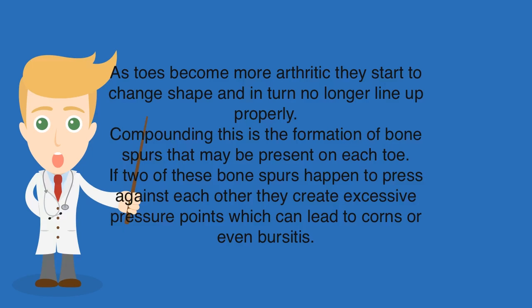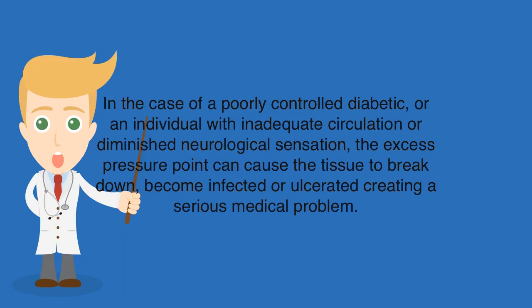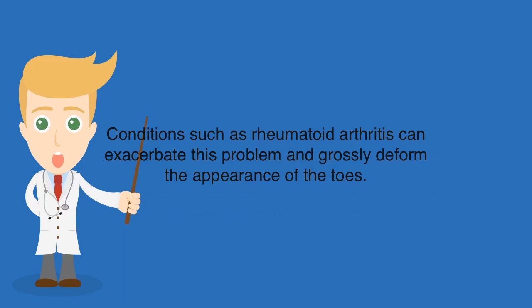As toes become more arthritic, they start to change shape and in turn no longer line up properly. Compounding this is the formation of bone spurs that may be present on each toe. If two of these bone spurs happen to press against each other, they create excessive pressure points which can lead to corns or even bursitis. In the case of a poorly controlled diabetic, or an individual with inadequate circulation or diminished neurological sensation, the excess pressure point can cause the tissue to break down, become infected or ulcerated, creating a serious medical problem. Conditions such as rheumatoid arthritis can exacerbate this problem and grossly deform the appearance of the toes.